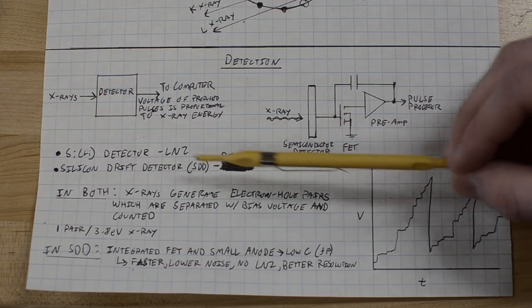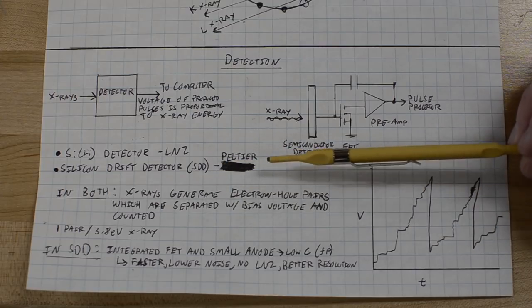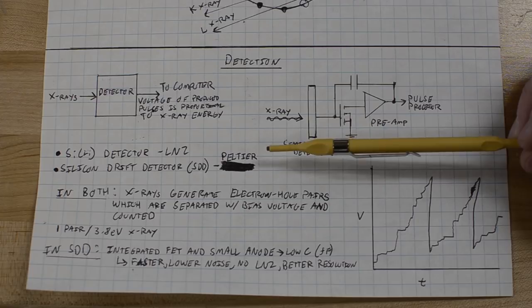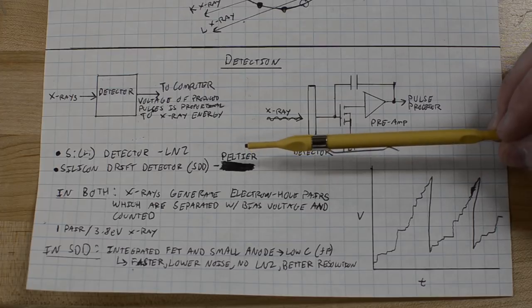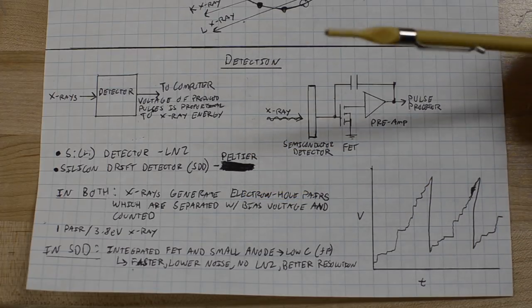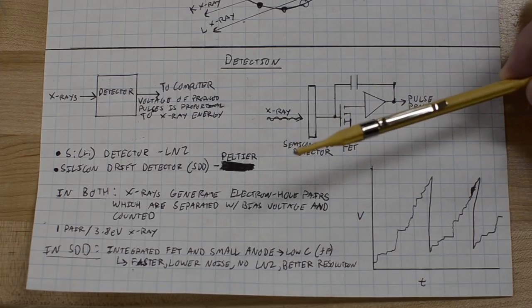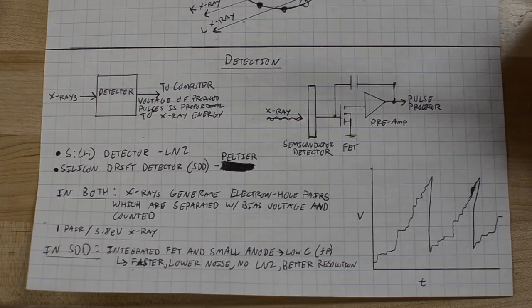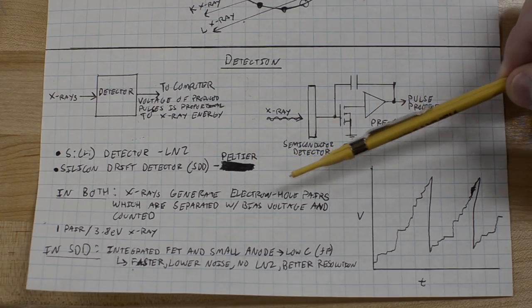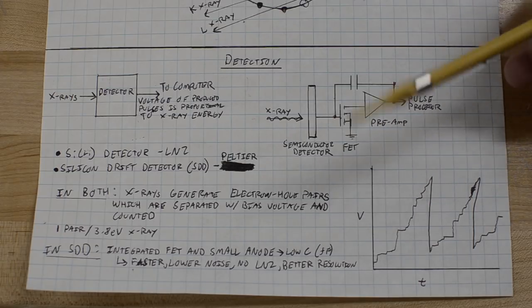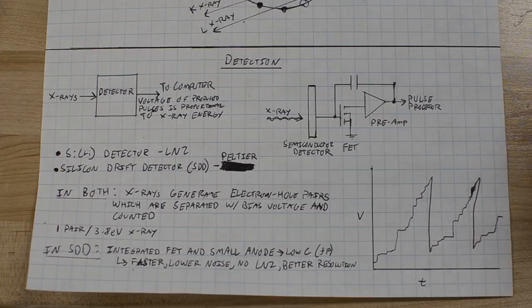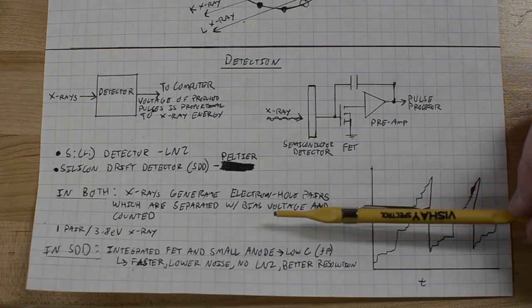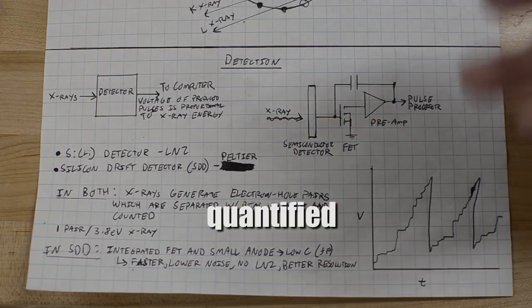I was lucky enough to pick up an SDD, or a silicon drift detector system, and these need only be cooled by a Peltier module, to get the electronics down so the thermal noise is low enough that you can actually get useful information out of it. This is a much easier system to deal with and a cleaner system as well. In both of these, you're probably already guessing at how they work. The X-rays will generate electron-hole pairs when they strike the semiconductor.